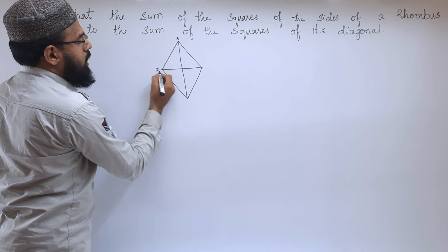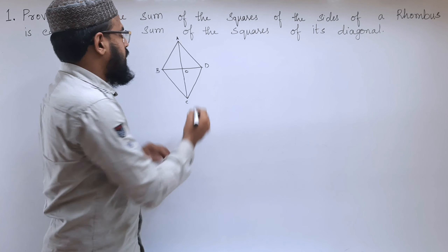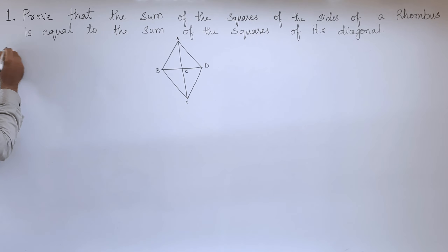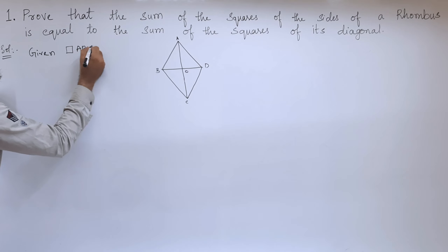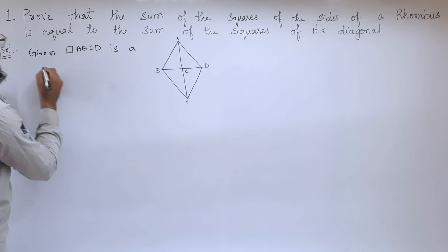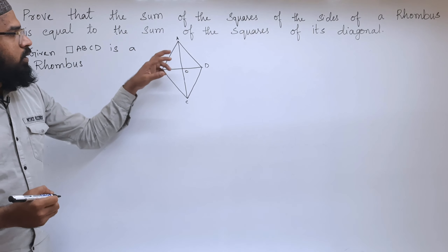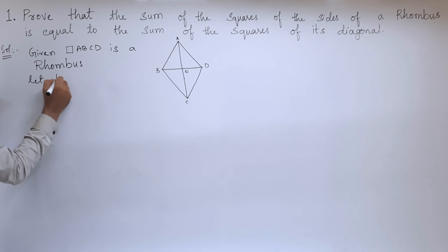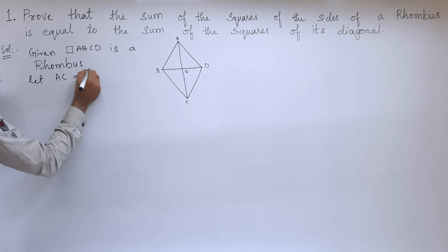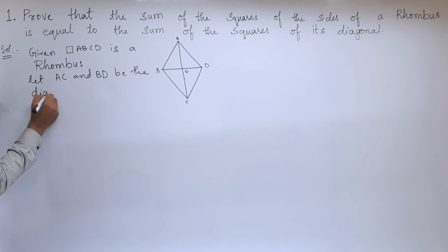Let this be a rhombus A, B, C, D, and the point where the diagonals cut each other is O. In the solution, we write: Given — quadrilateral ABCD is a rhombus. In this rhombus, AC and BD are the diagonals. Let AC and BD be the diagonals.